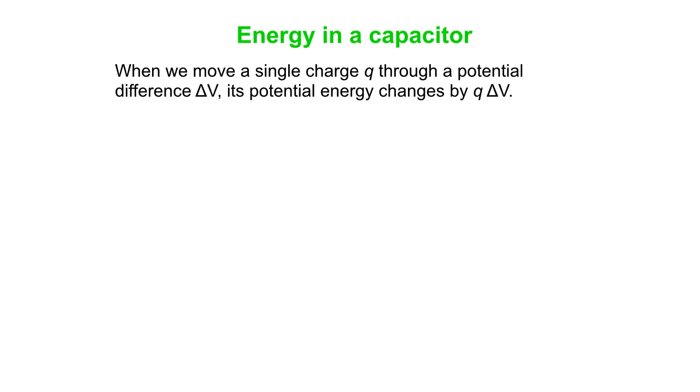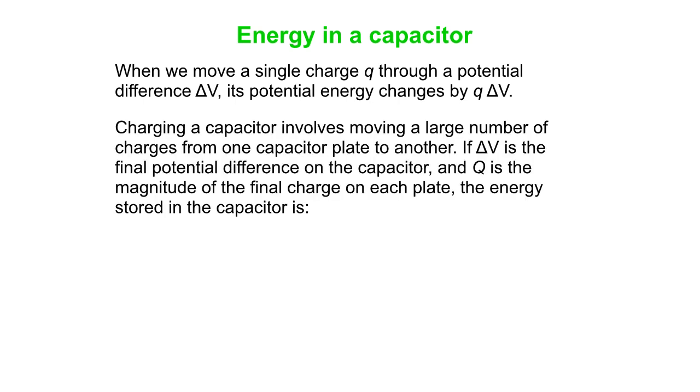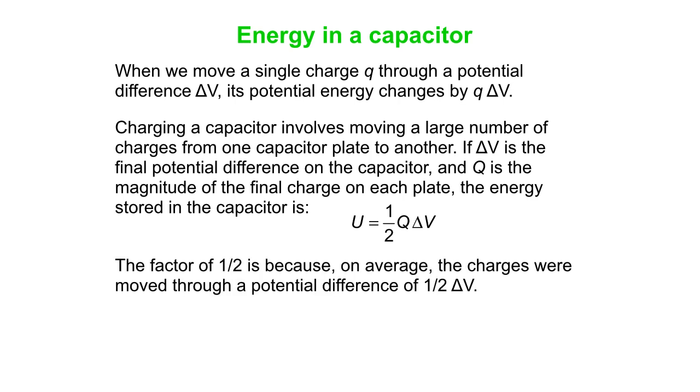And you've got energy stored in there in the field itself. So you know that if we take a single charge and move through a potential difference delta V, its potential energy changes by q delta V. Now a capacitor involves moving a whole bunch of charges from one plate to another, one at a time. You can imagine the battery doing that. And we find the energy stored is one-half q delta V, and why is it a half there? Well, the factor of a half is because on average the charges were moved through a potential difference of half the final voltage. So the first one that is pumped over, the voltage is zero, really. There's no difference between the plates. And then the more the battery pumps over, the bigger the voltage gets on the capacitor until it finally reaches delta V. So on average it's going through half a delta V.